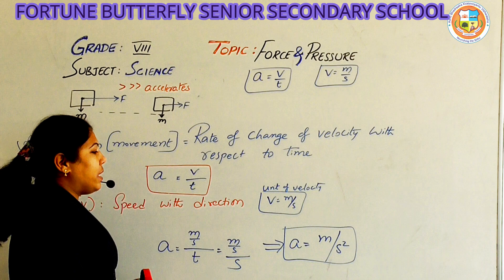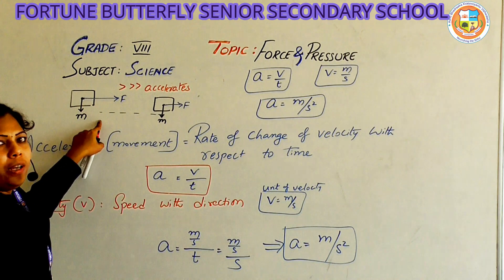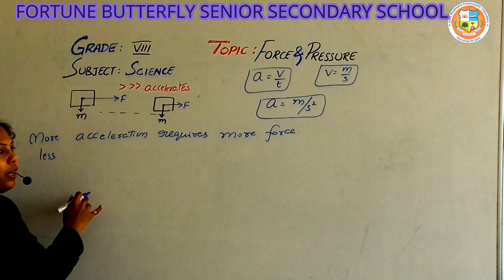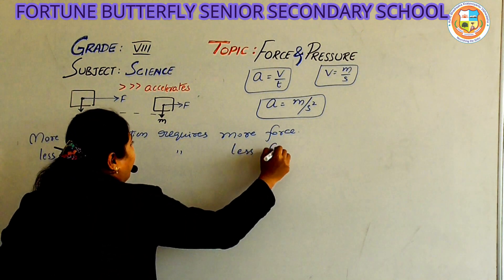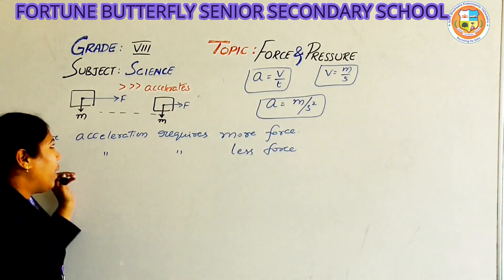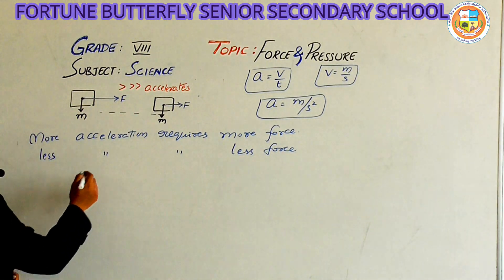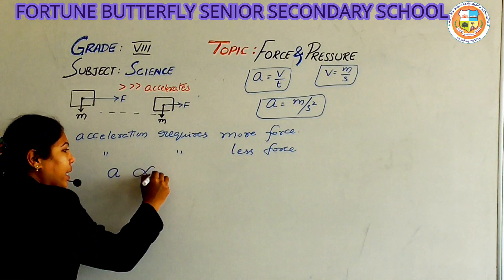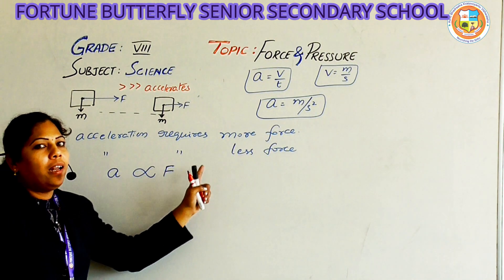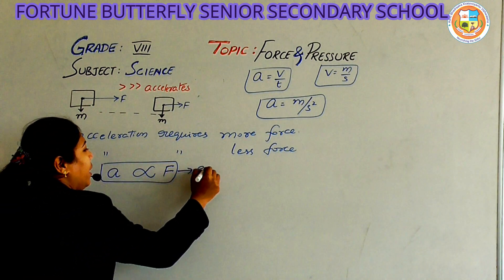With these two equations, acceleration is in meters per second squared. Now let us enter into the topic. More acceleration requires more force, and less acceleration requires less force. If I apply more force, the object will travel a greater distance. So acceleration is directly proportional to force — this is equation number one.